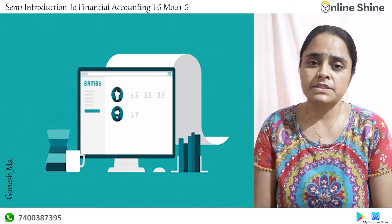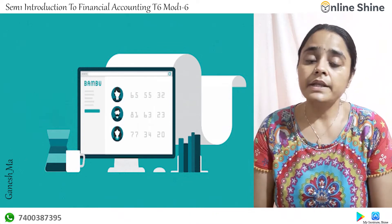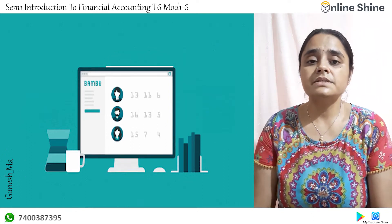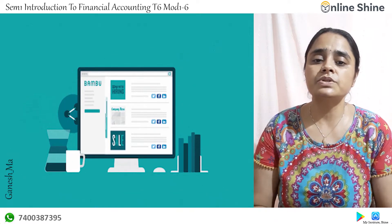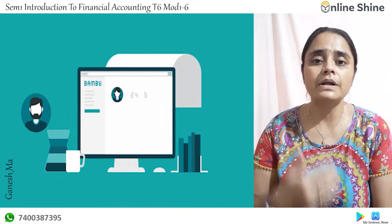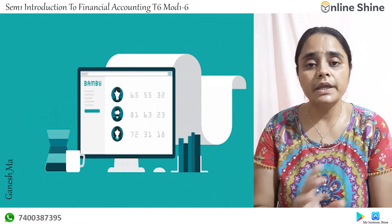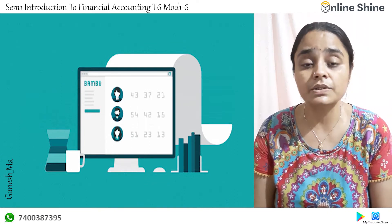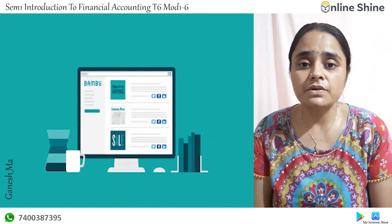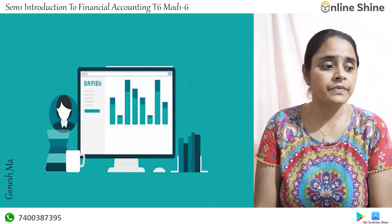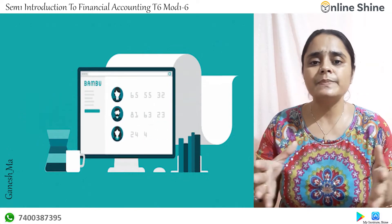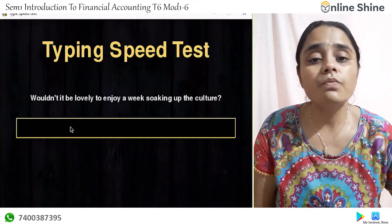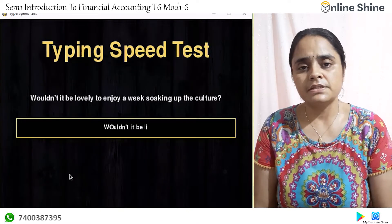The main features of computerized systems include online reporting — you can get multiple reports without wastage of time. Some systems have inbuilt reports; you just have to put in the commands and you get all types of reports. In a manual system you have to prepare each report, but here you just give the command for a particular date range and the report gets displayed. There is also grouping of accounts from the beginning.